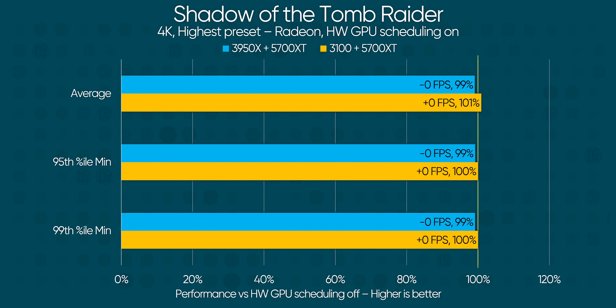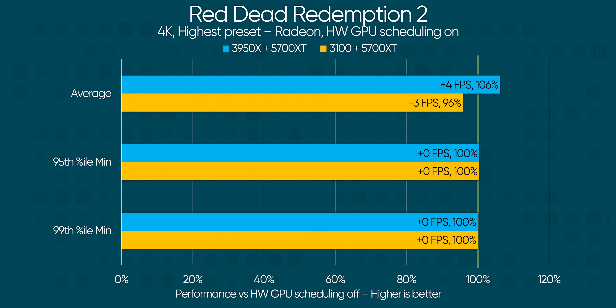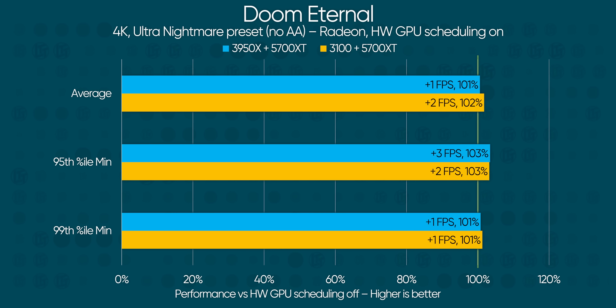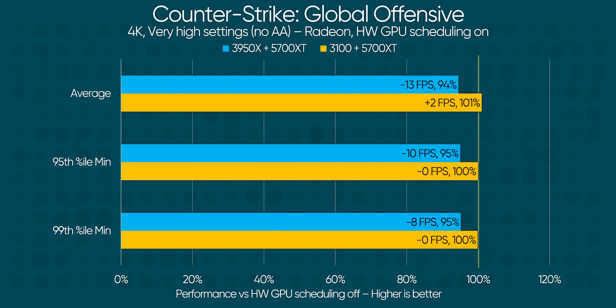As for AMD, there's not much movement at 4K, which might be expected due to the low frame rates out of a 5700 XT at that resolution. Both Shadow of the Tomb Raider and Red Dead Redemption 2 are essentially unchanged over the traditional scheduler, with averages being a bit lower and higher for the quad-core and 16-core respectively. Doom Eternal shows a measurable, if slight, performance bump across the board, and CSGO seems to not really like hardware GPU scheduling with a multi-CCD CPU like our 3950X, dropping a good 5% in performance compared to the traditional scheduler.